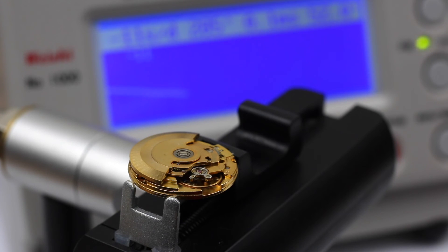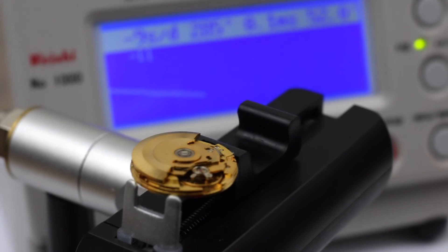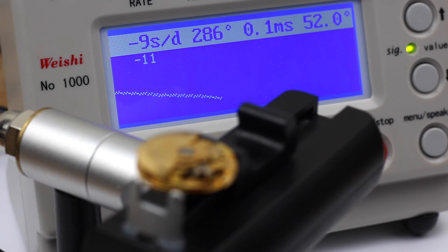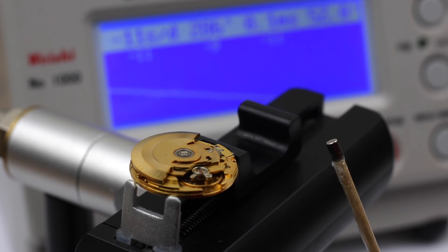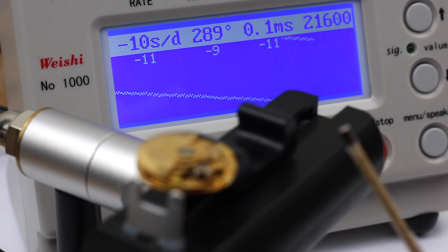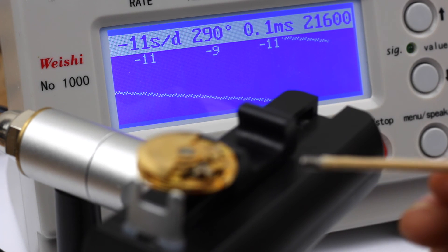So how does that look in real life? I've comprised a little experiment here where I have a watch, a mechanical movement on the timegrapher and I will slowly introduce a magnet to that movement and you will see the change first hand on the timegrapher.